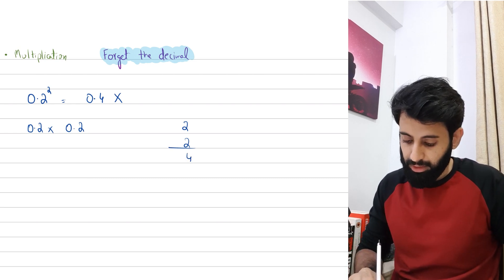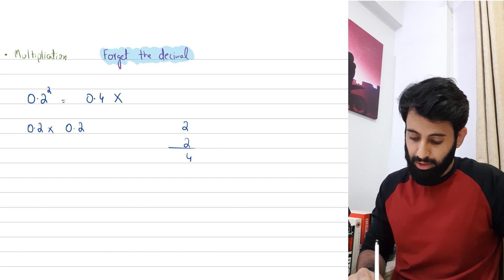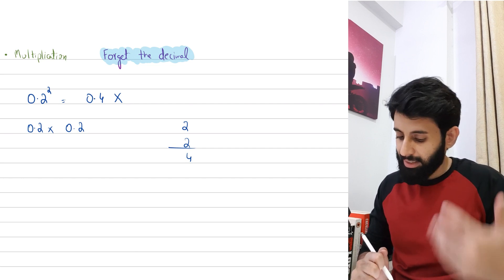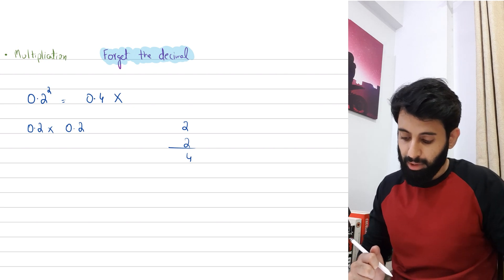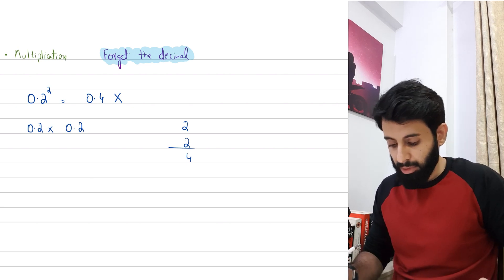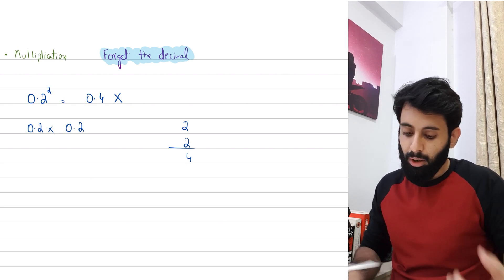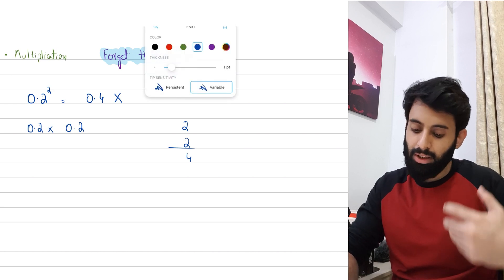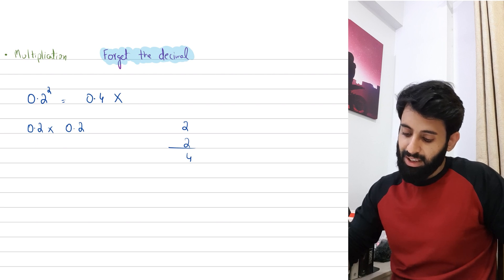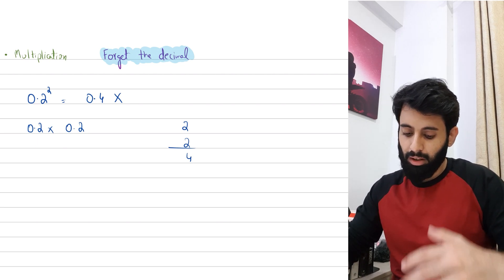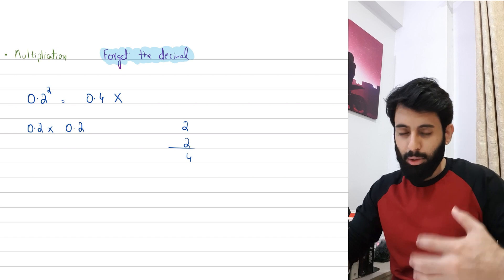So that means we're simply doing 2 times 2, which is equal to 4. Now, as I mentioned earlier, you got to remember that you forget about the decimal. We just did that, we forgot about the decimal and we ended up with 4. Now, you don't completely forget about the decimal, you forget about it for the time being.